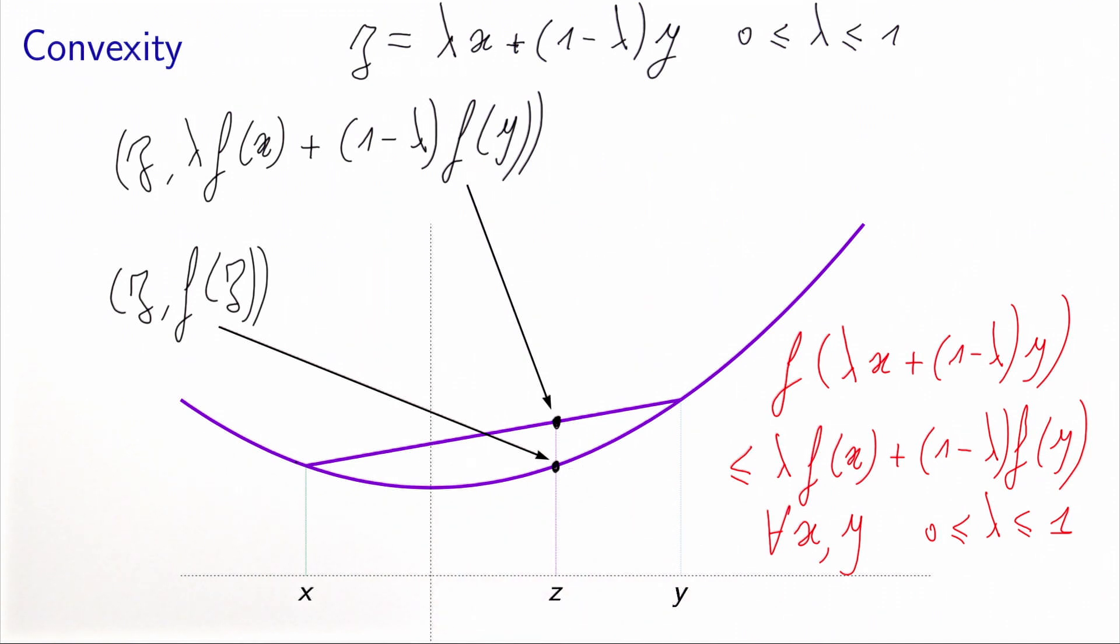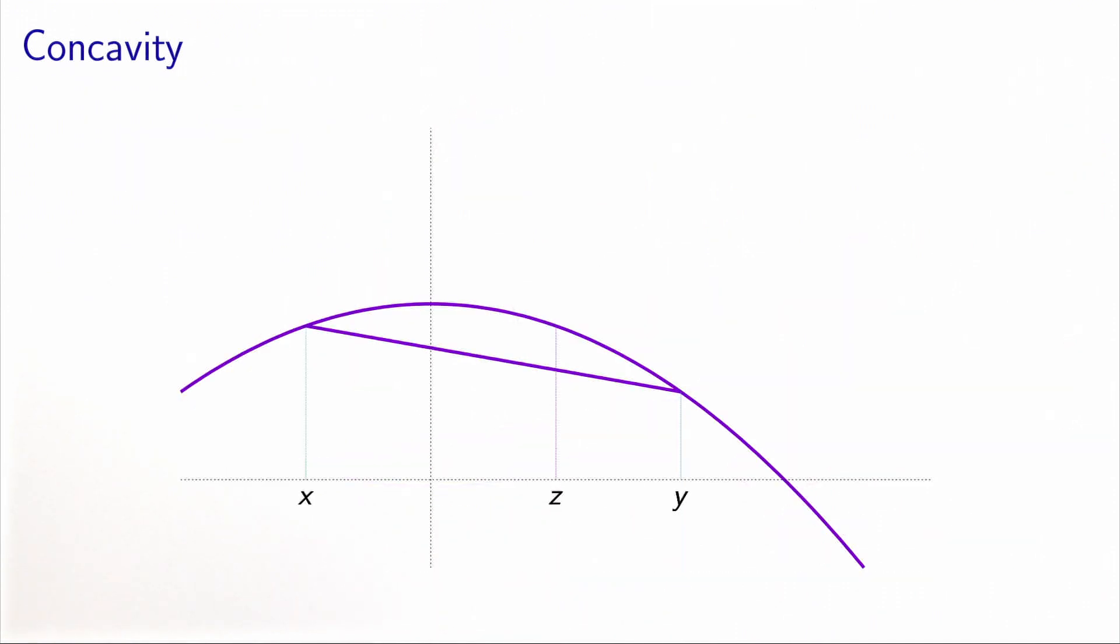Now you can define in a similar way concavity. Concavity is exactly the same but in the opposite direction. So a function will be said to be concave if for each x and y, the line that you obtain by drawing between x f of x and y f of y will be below the function. This will be called concavity.